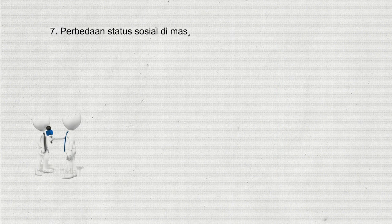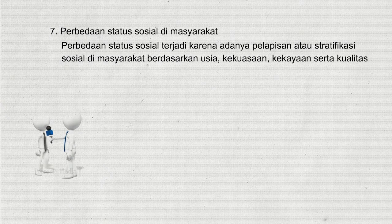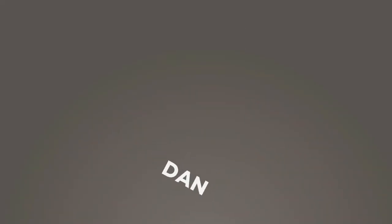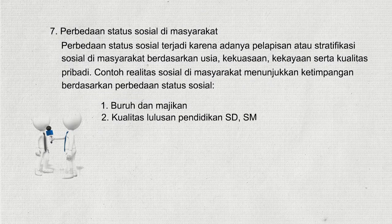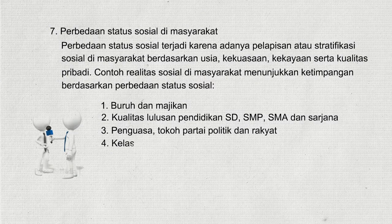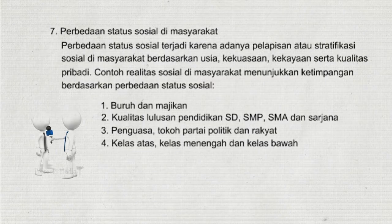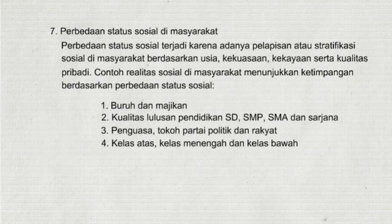7. Perbedaan status sosial di masyarakat. Perbedaan status sosial terjadi karena adanya pelapisan atau stratifikasi sosial di masyarakat berdasarkan usia, kekuasaan, kekayaan, serta kualitas pribadi. Contoh realitas sosial menunjukkan ketimpangan berdasarkan perbedaan status sosial: 1. Buruh dan majikan, 2. Kualitas lulusan pendidikan SD, SMP, SMA, dan Sarjana, 3. Penguasa, tokoh partai politik, dan rakyat, 4. Kelas atas, kelas menengah, dan kelas bawah.